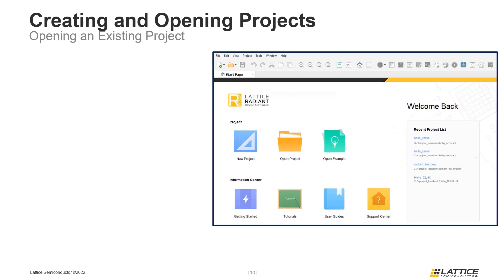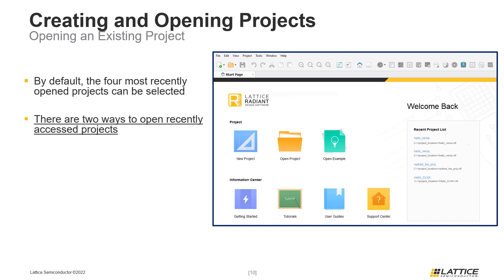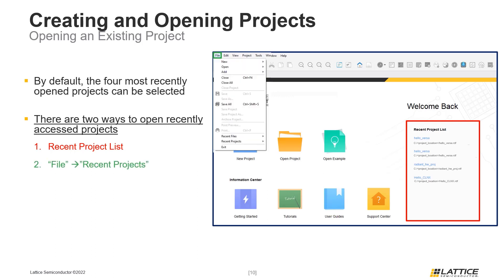Another way to open existing projects is to open a recent project. By default, the four most recently opened Radiant projects are available for selection. The first way to open a recent project is to select the project's name from the recent project list on the start page. Another way is to select File from Radiant's menu bar, then Recent Projects from the drop-down, which expands a list of the four most recently opened projects.